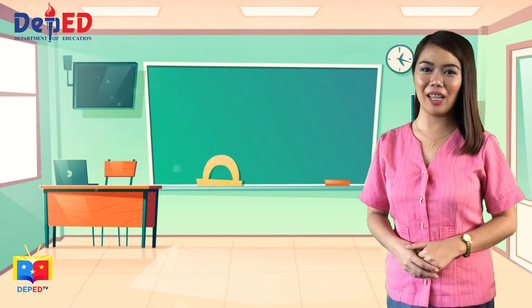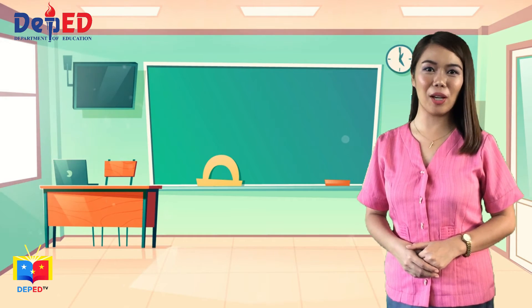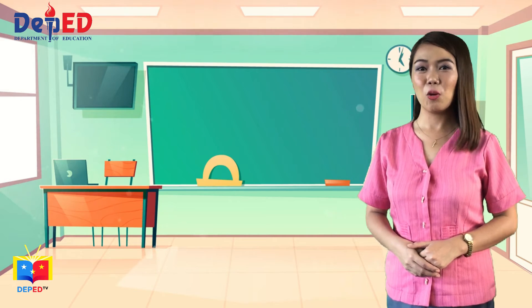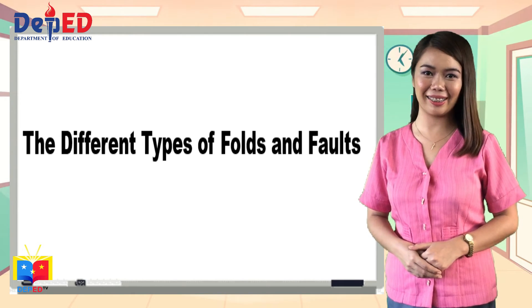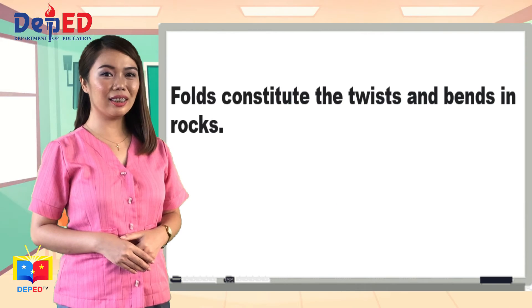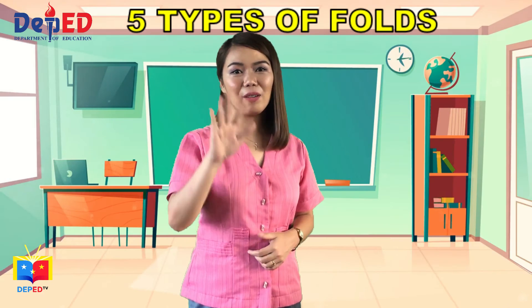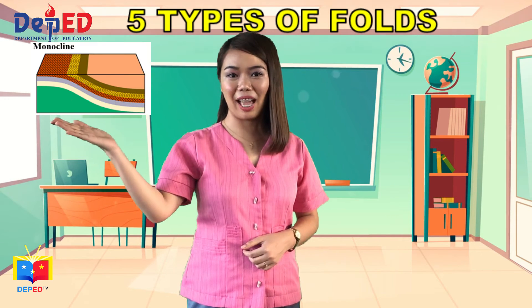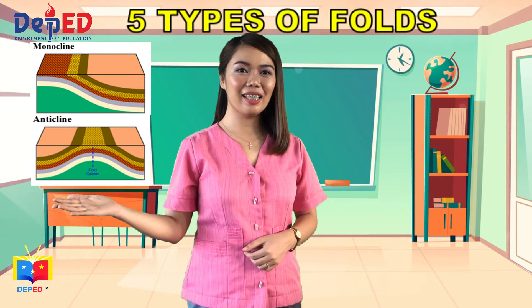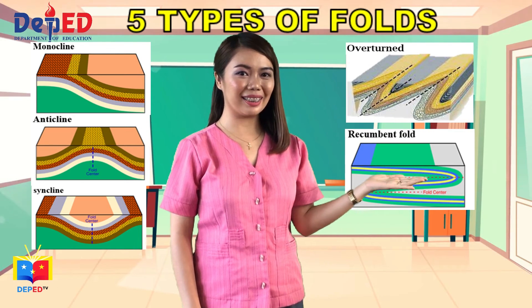Now we are about to end our lesson for today. Let us recap what we have learned. We discussed the different types of folds and faults. Folds constitute the twists and bends in rock layers. There are five types of folds: monocline, anticline, syncline, overturned, and recumbent.